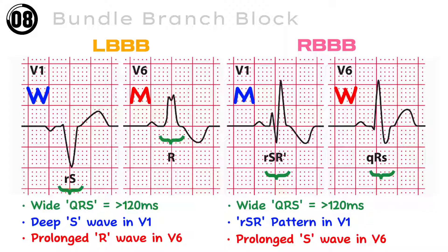To remember this easily, we can use the mnemonic WiLLiaM and MaRRoW. When there are ST changes with bundle branch block, it is very difficult to evaluate and has certain other criteria to follow.